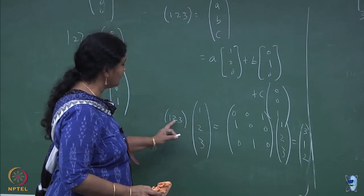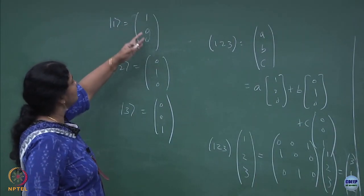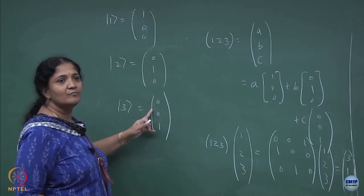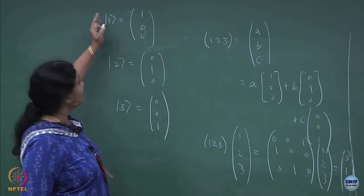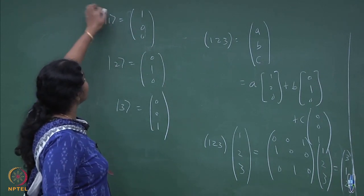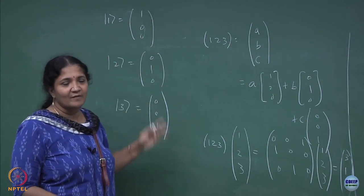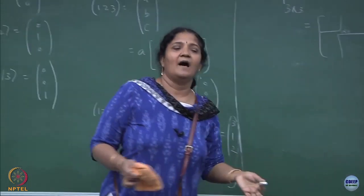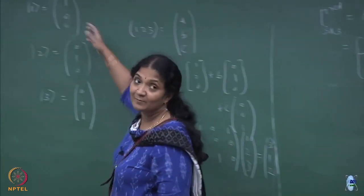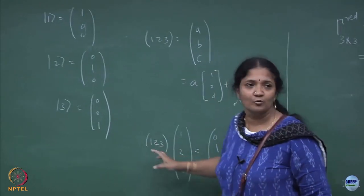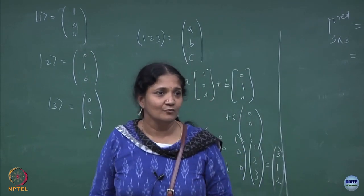When you write the matrix representation, this is a cycle structure. If you call |2⟩ corresponding to (0,1,0) — it is just a representation; the quantum state written in Dirac bracket notation can also be written as a column vector. Whenever you do a matrix operation, you need to define a basis vector space. These are the 3 basis vectors, and then (1 2 3) takes |1⟩ to |2⟩, |2⟩ to |3⟩, |3⟩ to |1⟩ — that is what the matrix does.